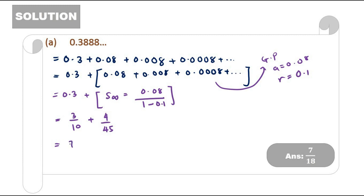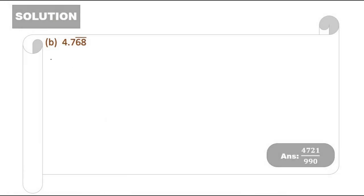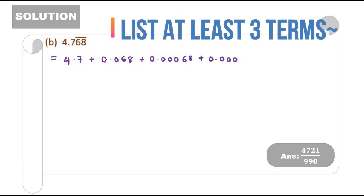Now we would have 7 over 18. Next, how about this one? This is actually the form of 4.7 plus 0.068 plus 0.00068 and so on.